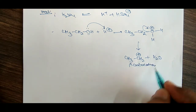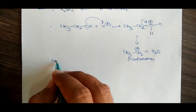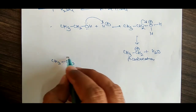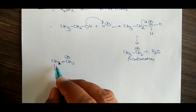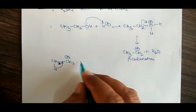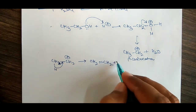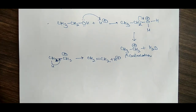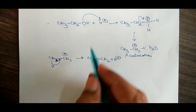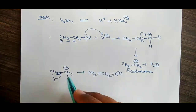The carbon carrying the positive charge is bonded to only one other carbon atom, so this is called a primary carbocation. In the next step, the CH3 group adjacent to the positive carbon donates electron density toward that carbon. Therefore, what we get is CH2 double bond CH2 — ethene — with loss of H positive.